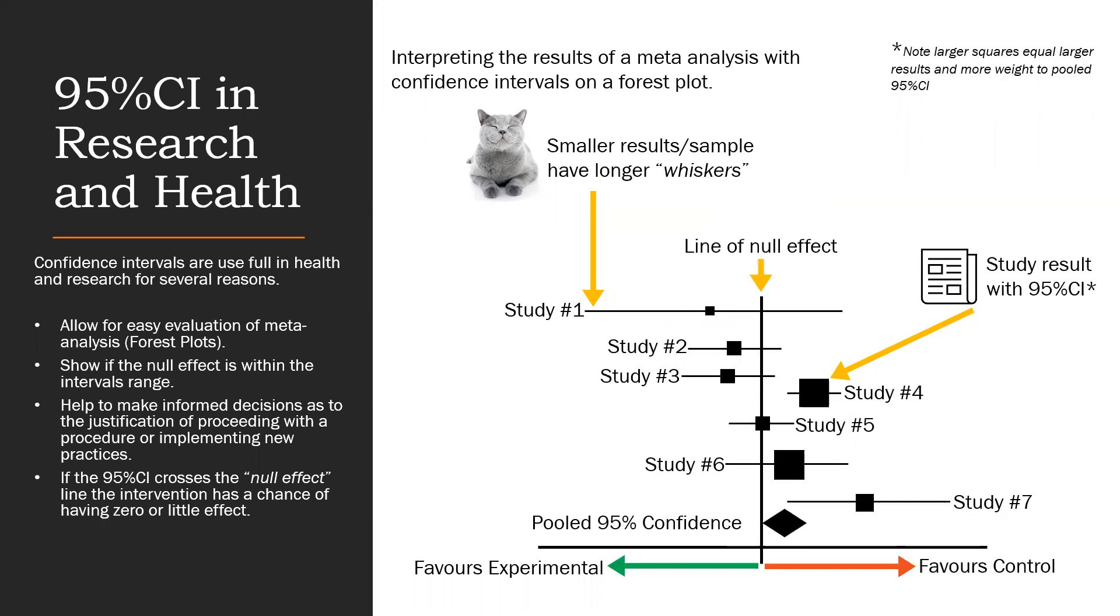So here we can see the diamond confidence interval and it represents the pooled data from seven studies. When displayed in this way, they allow for fast understanding into the outcome or intervention.